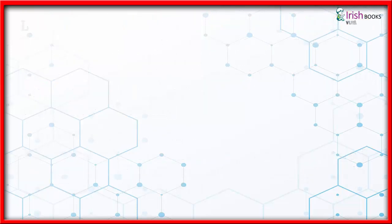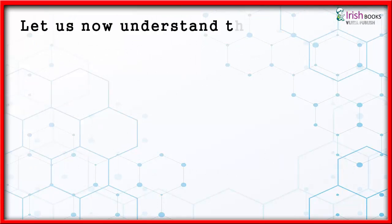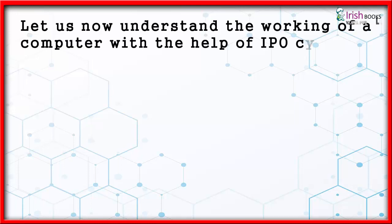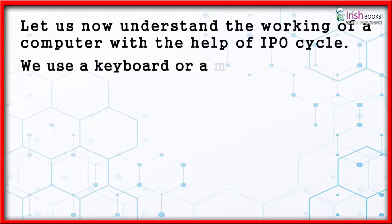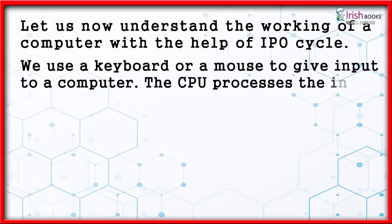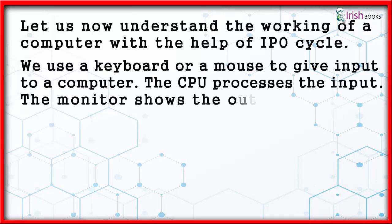Let us now understand the working of a computer with the help of the IPO cycle. We use a keyboard or a mouse to give input to a computer. The CPU processes the input. The monitor shows the output.